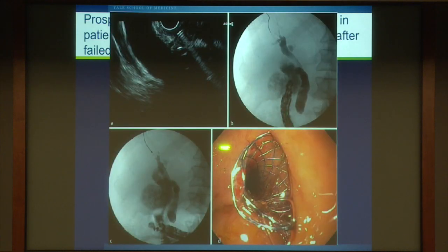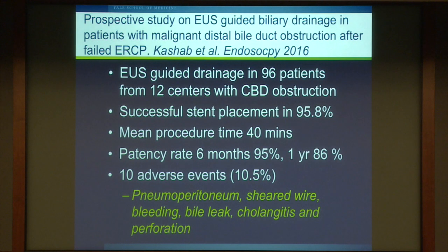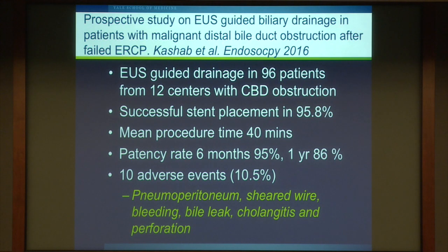Here are examples of EUS-guided biliary drainage: a very dilated bile duct accessed by EUS in the duodenal bulb, a guide wire passed into the bile duct, the tract dilated, and a metal stent connecting the duodenum to the bile duct. This technology is still evolving. Recent prospective data from almost 100 patients across 12 centers showed a 95% successful stent placement rate and a procedure time of 40 minutes — really excellent results.